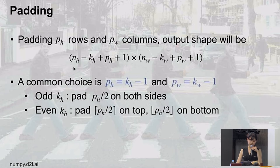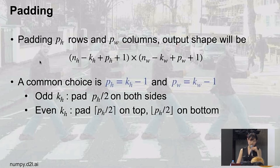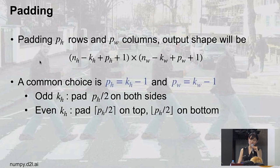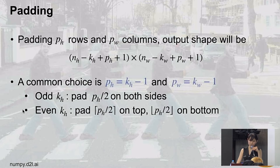However, padding alone can be too slow if we want to quickly reduce an image's spatial dimensions — we might need 7 or 10 layers just to downscale. So we use stride, which means sliding the kernel by more than one pixel at a time. Instead of stepping 1 pixel, we step s_H pixels in height (and s_W in width). For example, stride=3 in height means we jump 3 pixels each step.